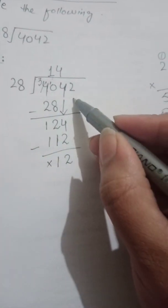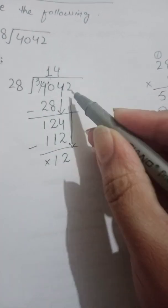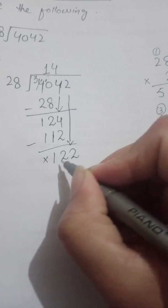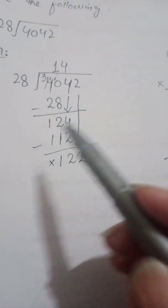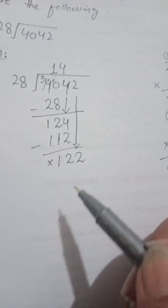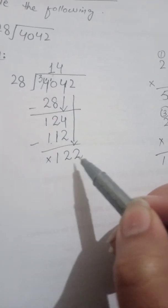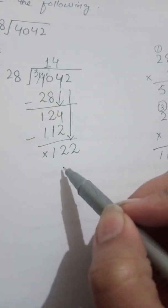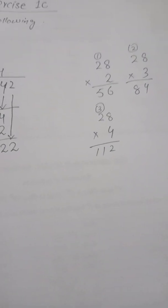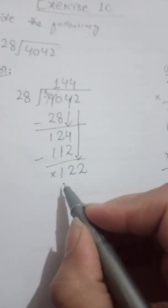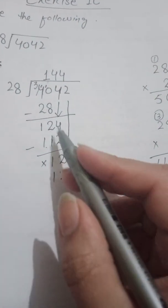After subtracting, the next step is to bring down the next digit, which is 2. Now we have 122. Previously we had 124 and took 28 four times to get 112. Now we have 122, so we can again take 4 times — giving 112 — because we know that 28 times 5 would exceed this number. So again I take 4 times, write 4 in the quotient, and write 112 (the product of 28 × 4) below.